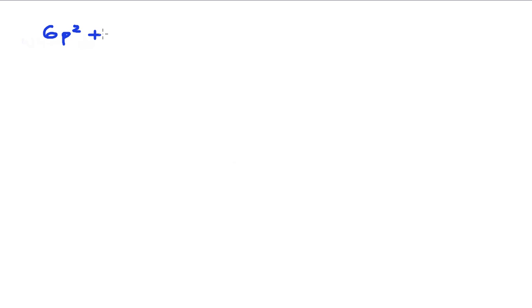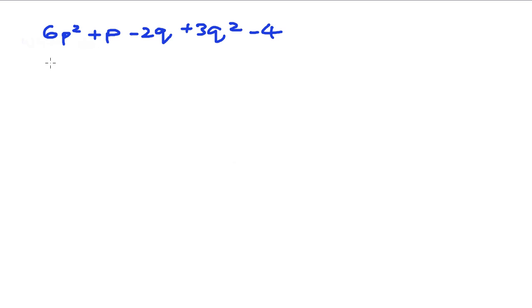Let's look at algebraic expressions in greater detail. So let's start by having an expression: minus two q plus three q squared minus four. So this looks complicated enough. There are a couple of naming conventions that you have to take a look at on how you describe this equation and its components.